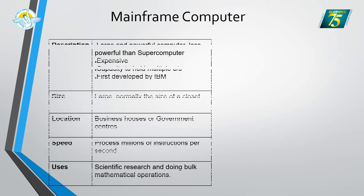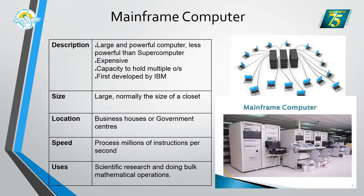The next type is mainframe computers. They are also large and powerful, but less powerful than supercomputers. They are expensive and have the capacity to hold multiple operating systems — meaning the same computer can run different OS like Windows 7, Windows XP, or Linux. Mainframe computers were developed by IBM and are roughly the size of a closet or wardrobe. They are mainly used in business houses and government centers, can process millions of instructions per second, and are used for scientific research and bulk mathematical operations.